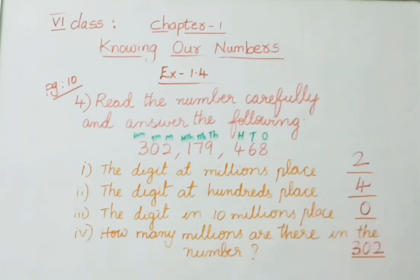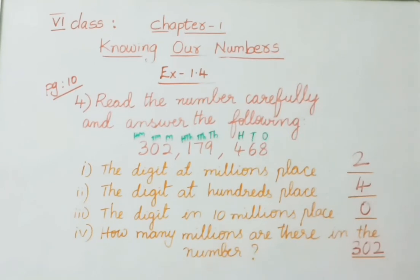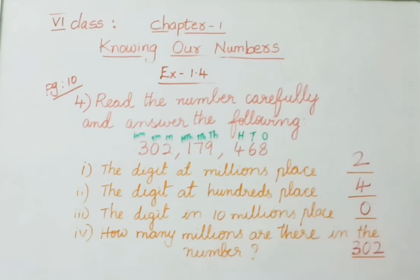By this sum we have completed Exercise 1.4. Today we learned how to write any number in the International system, how to represent their places, how to write the number name, and how to read the number clearly.